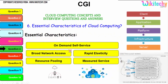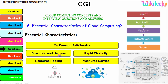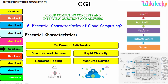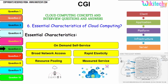Further essential characteristics include: on-demand self-service — you can get the service on demand; broad network access — you have very wide network access; rapid elasticity — you can increase or reduce resources quickly; resource pooling — you can allocate exactly how much resource you need; and measured service, which is a pay-as-you-go model where you pay for only what you use.